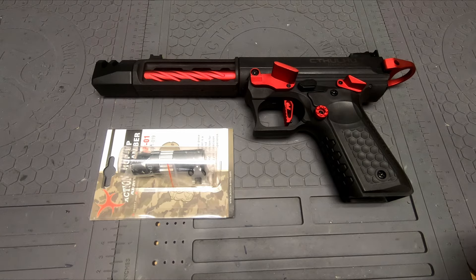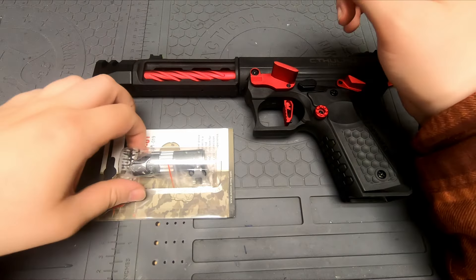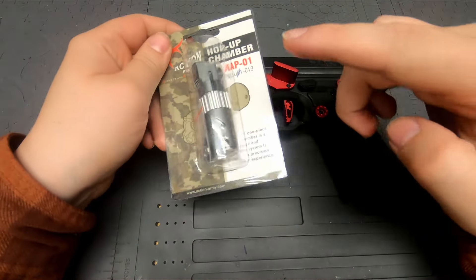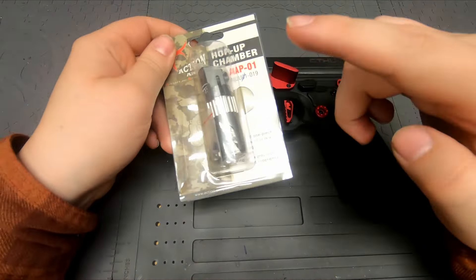Alright, so this is a bit of an overdue video here. I'm going to be installing the Action Army CNC hop-up chamber for the AAP-01, or in this case we're going to be doing it on the Lancer Tactical Cthulhu. So without further ado, let's get cracking here.